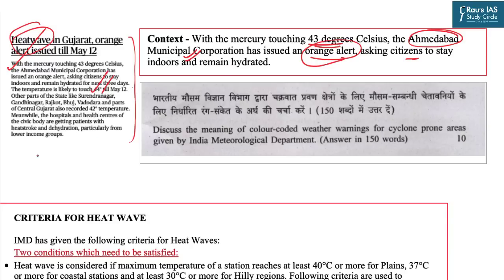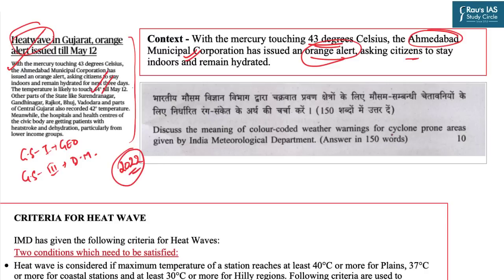As far as the UPSC syllabus is concerned, this topic is mainly relevant under two sections: General Studies Mains Paper 1 in the section of Geography, and General Studies Mains Paper 3 in the topic of Disaster Management. In the 2022 Mains, a question was asked about tropical cyclones: 'Discuss the meaning of color coded weather warnings for cyclone prone areas given by IMD.' So we shall similarly understand the color coded weather warning systems given by IMD in regard to heat waves.